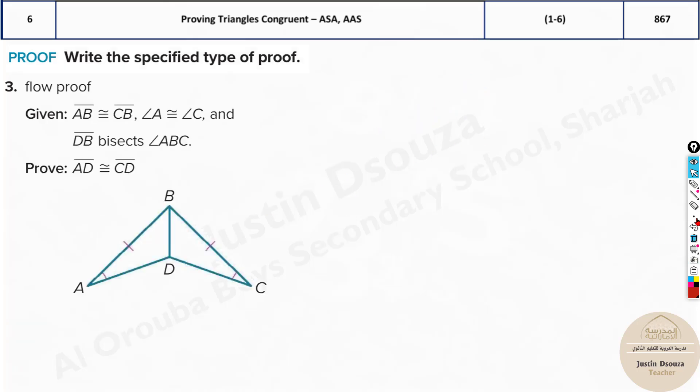What about this one? We have to prove that they both are congruent. The given is AB is congruent to CB, angle A is congruent to C, and DB bisects angle ABC. So this angle equals this angle because of bisection. These are equal, and the sides are equal, so we have ASA postulate. Now what have they asked us to prove? That these two lines are equal. Because of ASA postulate, we've proved that this triangle is equal to this triangle.